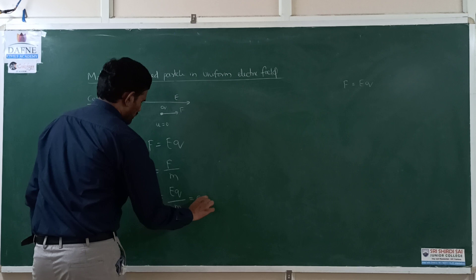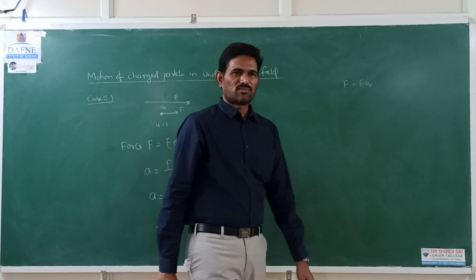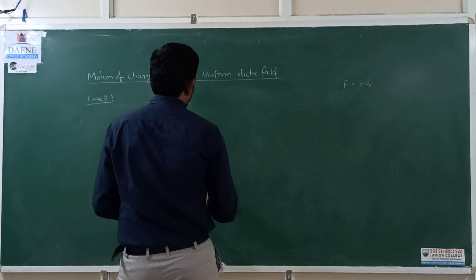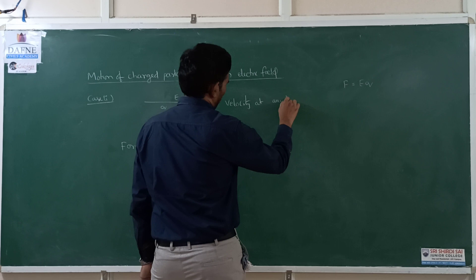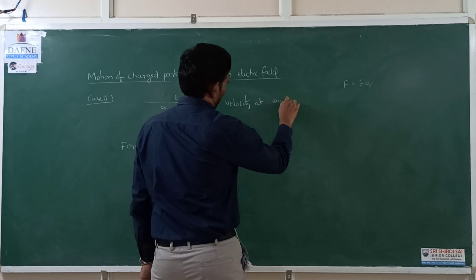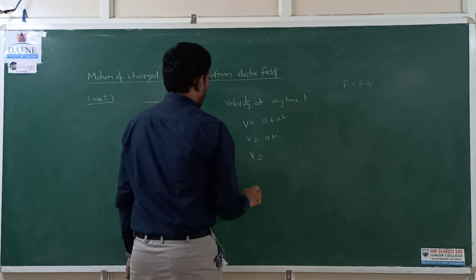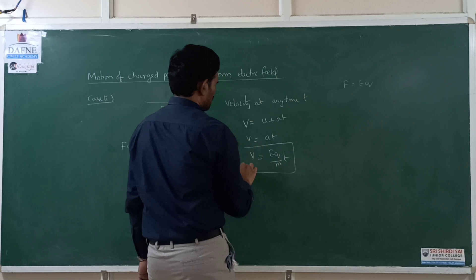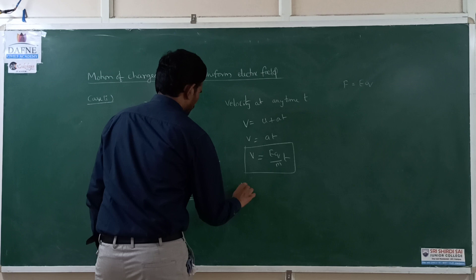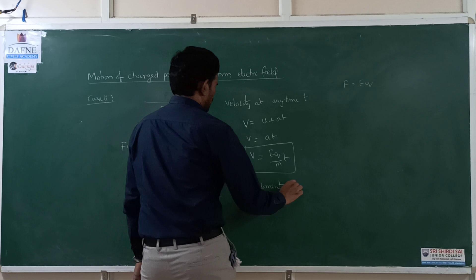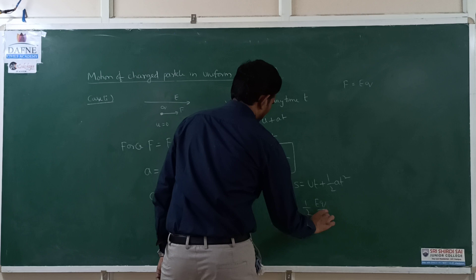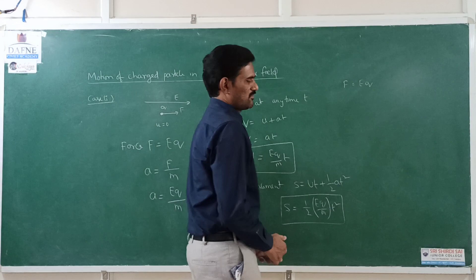Since the acceleration is constant, we can use kinematic equations. To find velocity at any time t: v = u + at. Since u is zero, v = (EQ/m)·t. For displacement: s = ut + ½at², which gives s = ½·(EQ/m)·t². These are the velocity and displacement as functions of time for a particle released from rest.